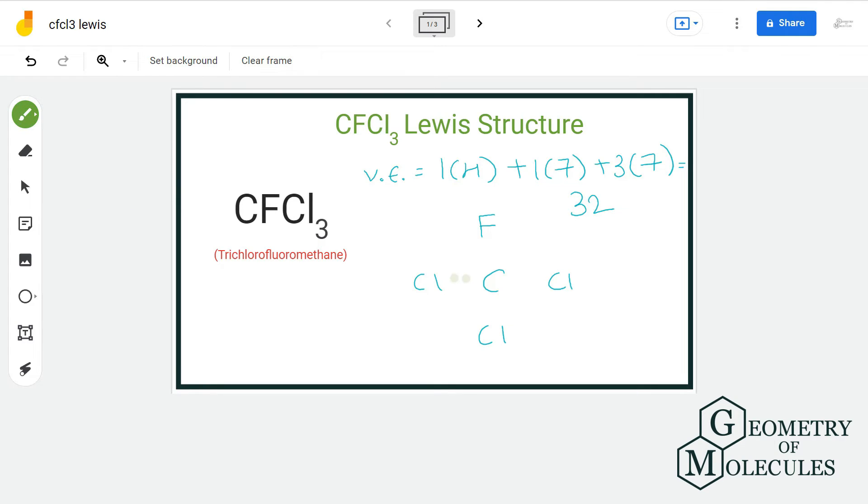As you can see here, each chlorine atom and fluorine atom needs six more electrons for complete octet. So let us go ahead and assign six electrons to each one of them for complete octet.